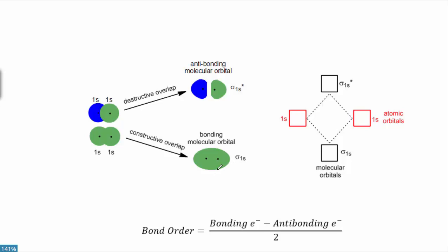We call this the sigma-1s bonding molecular orbital. The best place for an electron is right between the two nuclei — it's attracted to both, and it lowers its potential energy when closest to what it's attracted to. This molecular orbital is lower in energy than either of the individual 1s orbitals. On the other hand, when destructive overlap occurs, that same region right between the two nuclei is actually where a node is created — there is no orbital density there at all; that's the one place where an electron is totally not allowed to be.